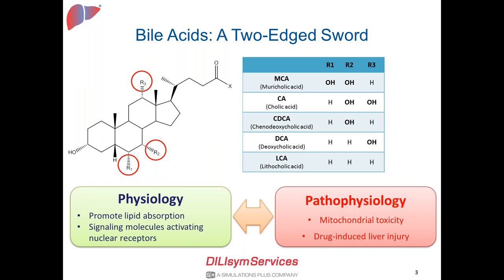However, if bile acids accumulate highly within the cells above physiological levels, they can cause toxicity. Bile acids have been shown to cause mitochondrial toxicity, increasing membrane potential. Since the liver is the major organ that synthesizes and eliminates bile acids, if any of these pathways are disrupted, bile acids can accumulate within the liver, causing drug-induced liver injury.